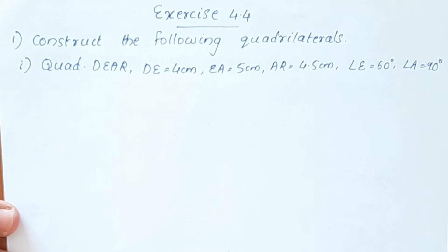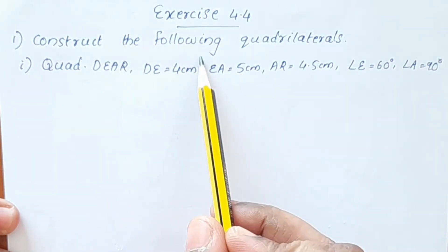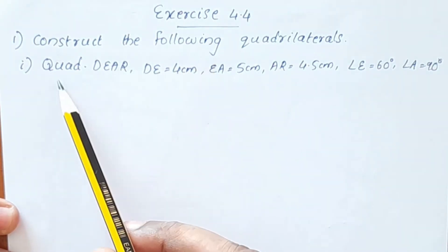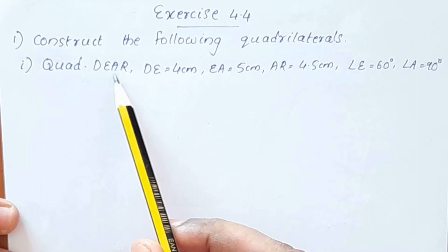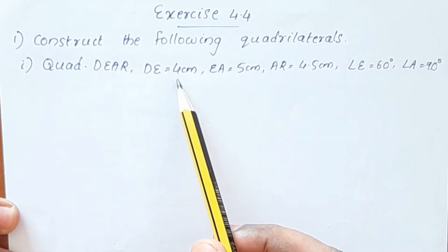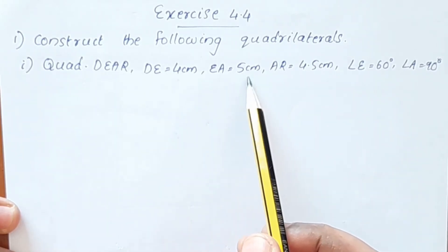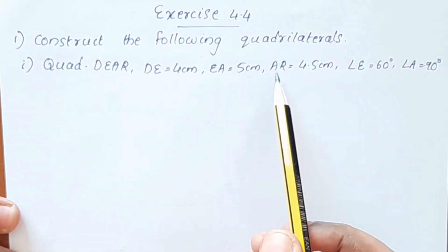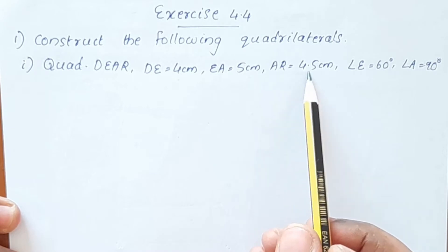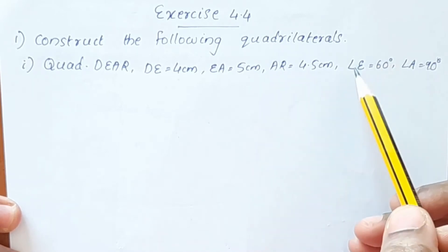The first question is: Construct the following quadrilaterals. DE is equal to 4 cm, EA is equal to 5 cm, AR is equal to 4.5 cm.